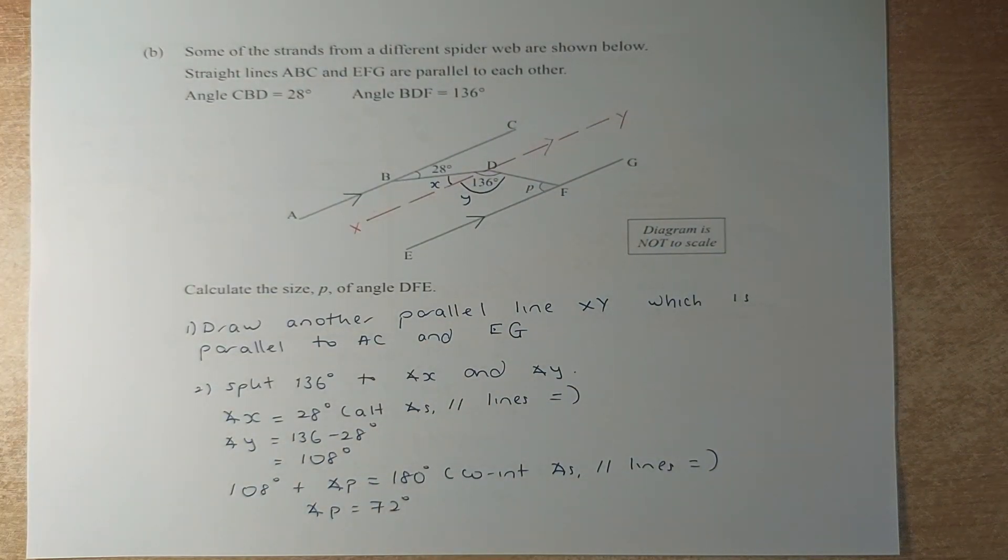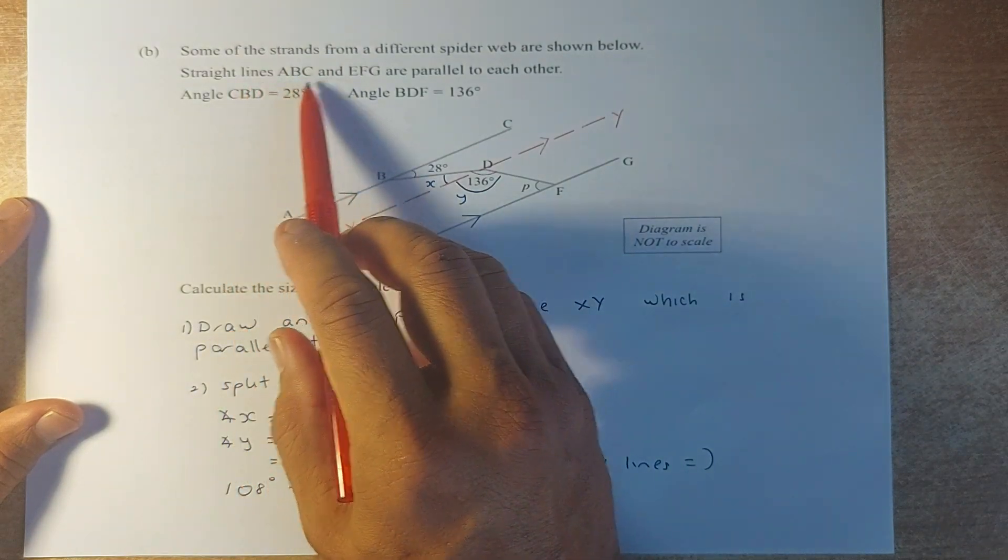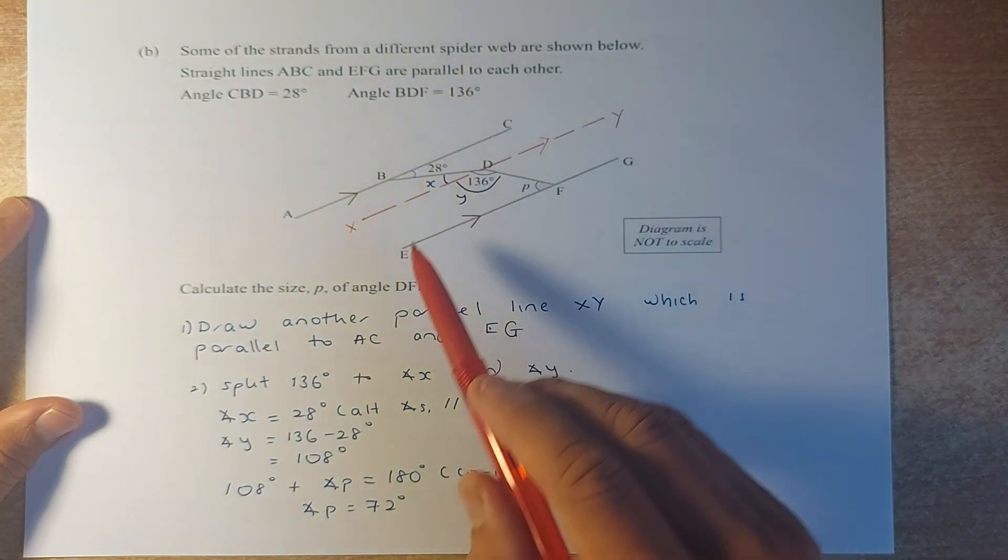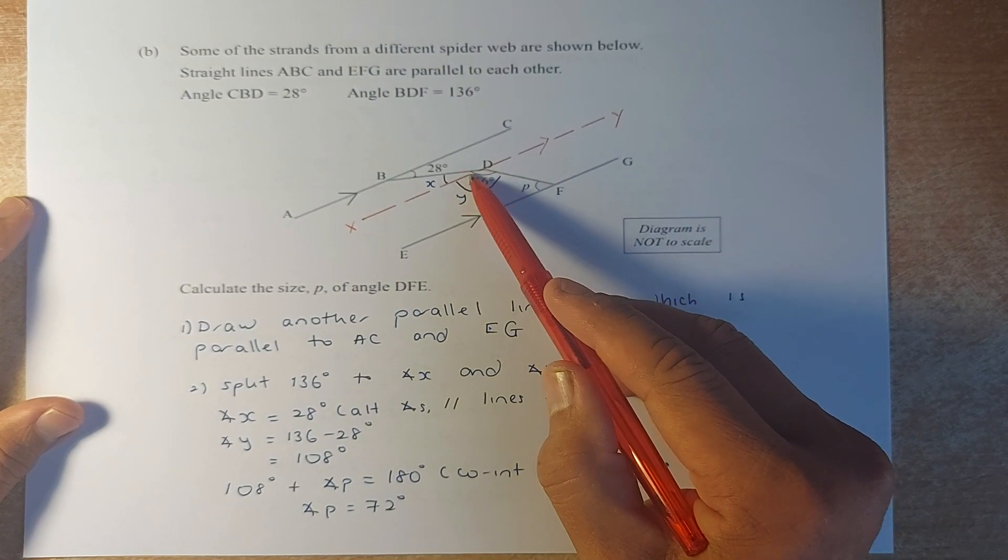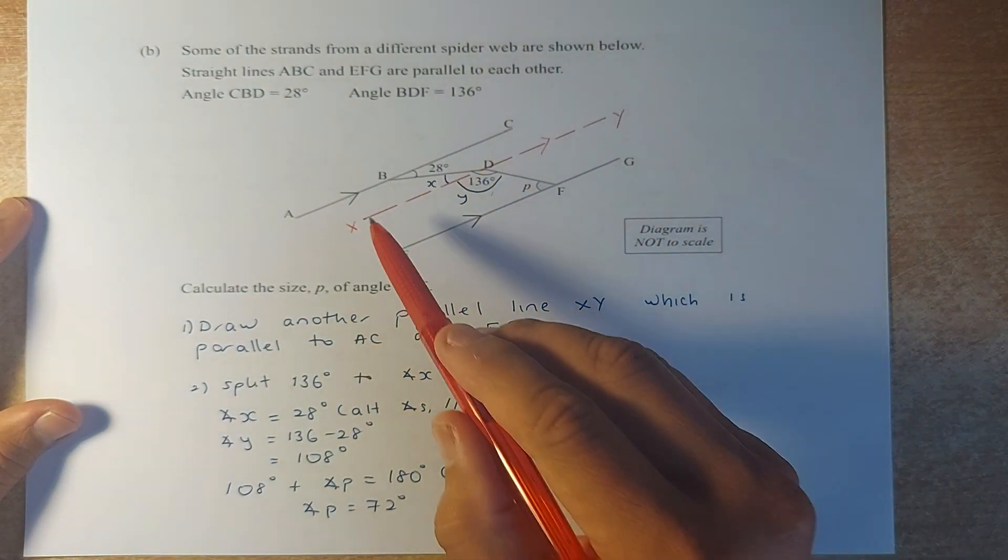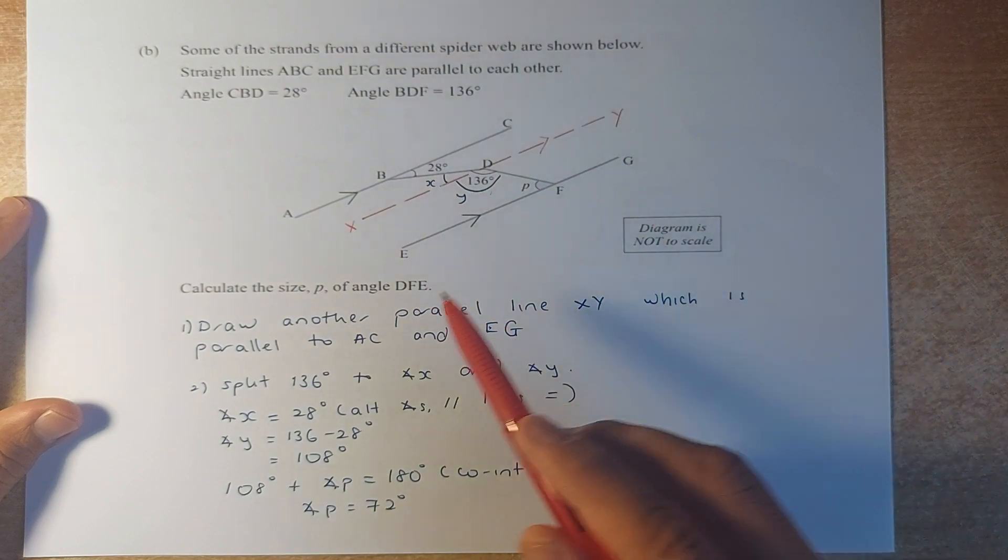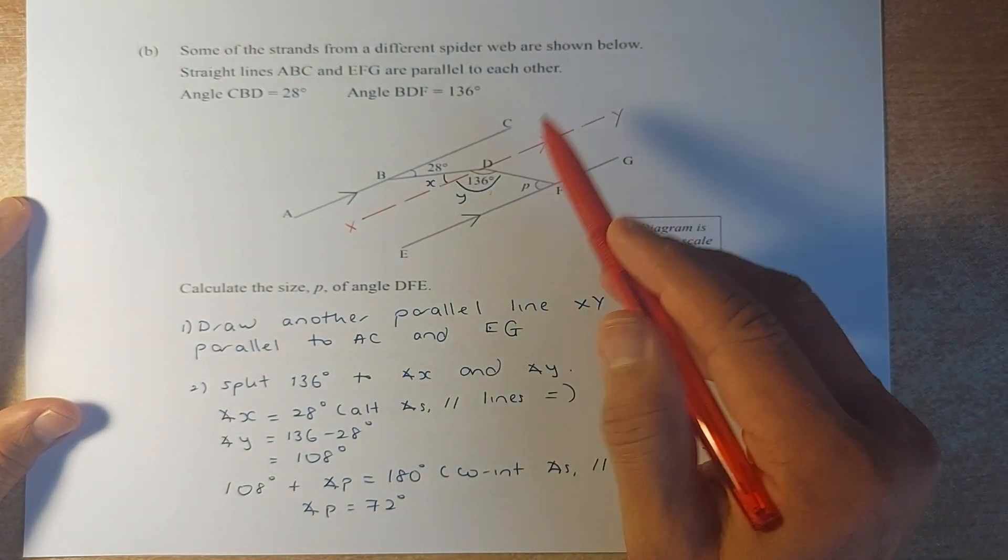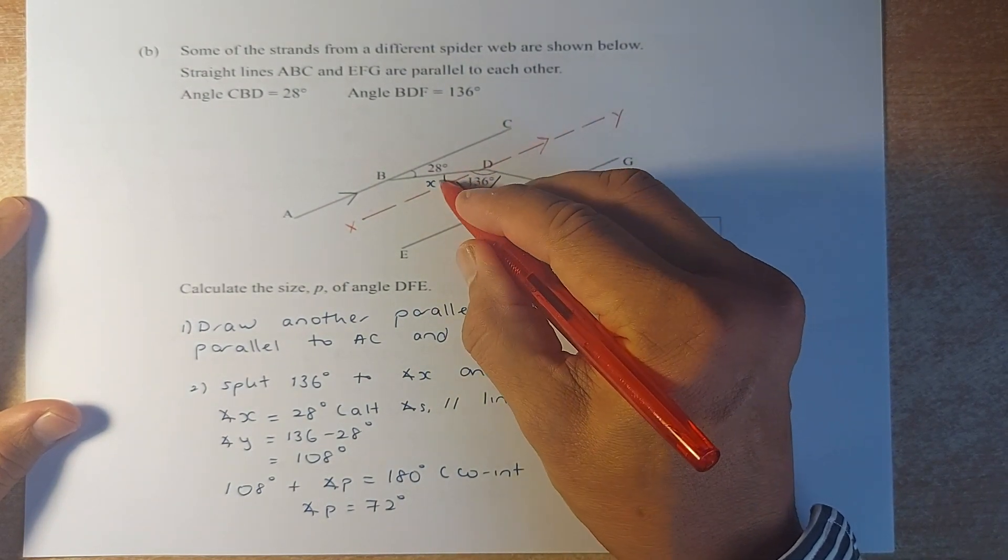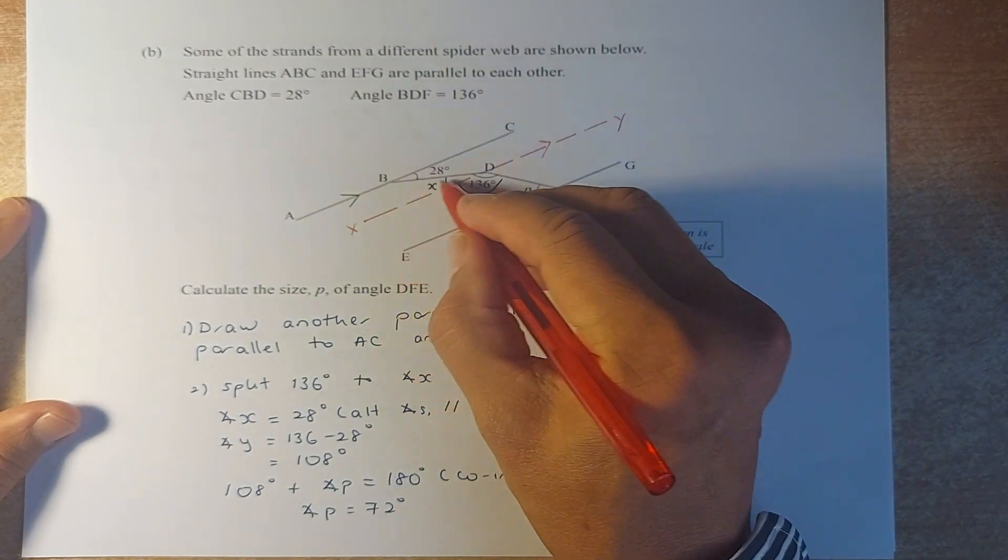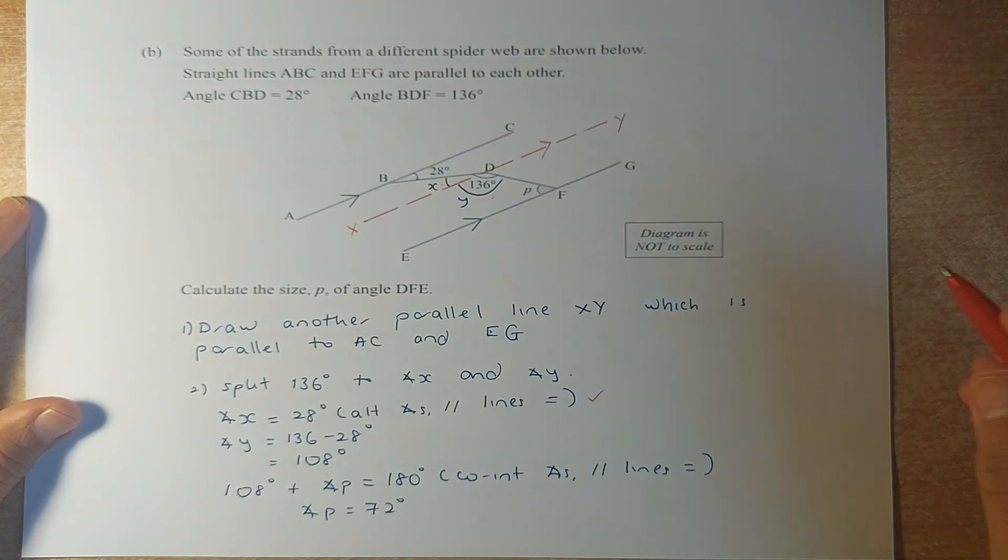Now we are going to do question 1b. This is slightly more difficult. They said that straight line ABC and EFG are parallel. So these two lines are parallel. Angle CBD, that is 28. And angle BDF, this whole angle here is 136 degrees. Step 1, we are going to draw another parallel line in between ABC and EFG. So we have X and Y that is parallel to these two lines. Next, we need to split the 136 into X and Y. We need to calculate X and Y. X is found by doing the alternate angle. So X must be 28 degrees because alternate angles on parallel lines are equal.